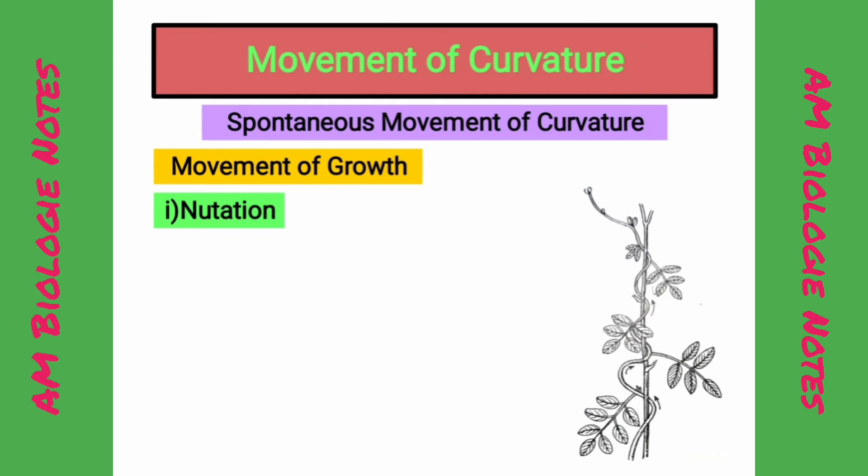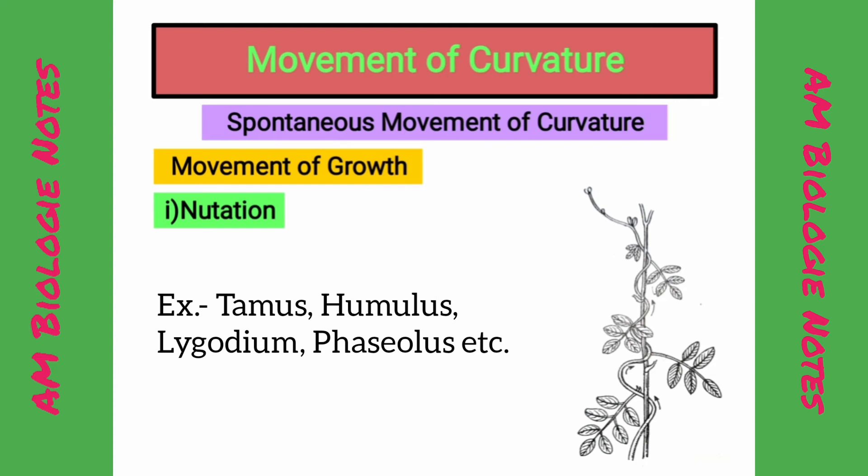This movement is also found in tendrils, roots, and pedicels of flowers. Examples of plants showing nutation are Tamas, Humulus, Lygodium, Phaseolus, etc.